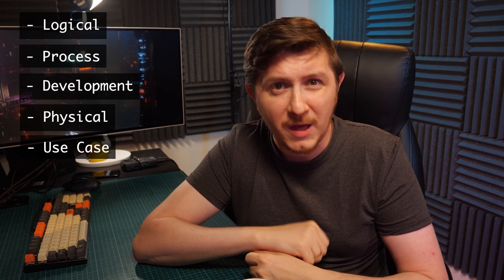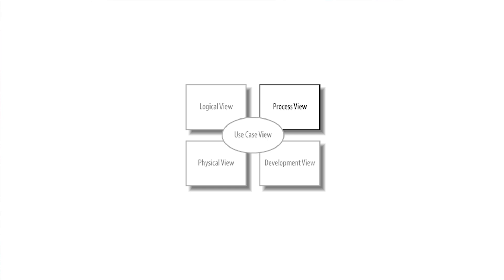UML offers these different flavors — different views: logical, process, development, physical, and use case view. These describe different aspects of software: how it's structured, how it works, how it's organized, how it's located on servers, and of course, how it is used.